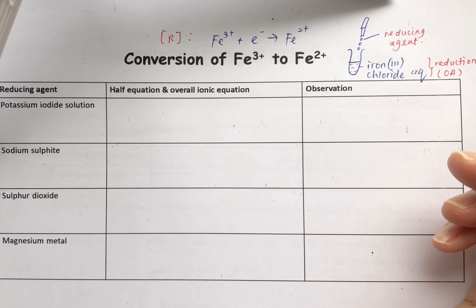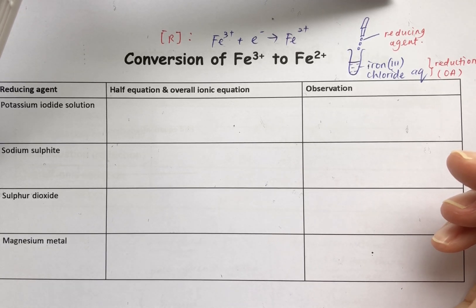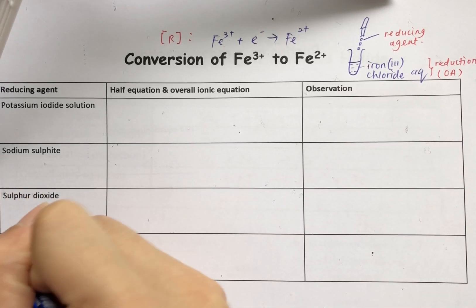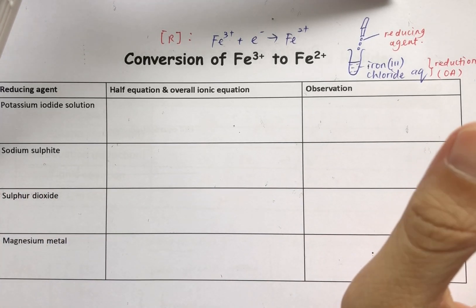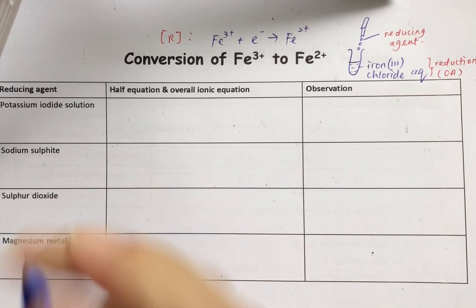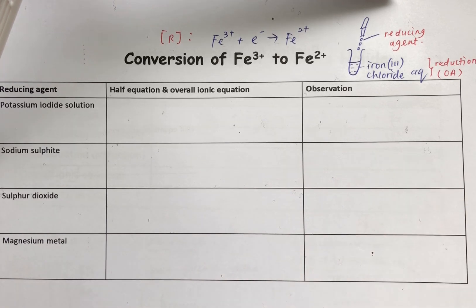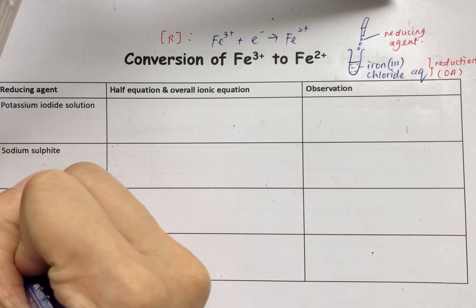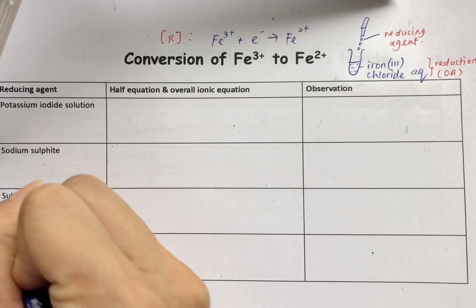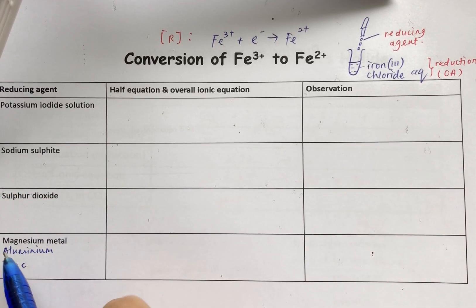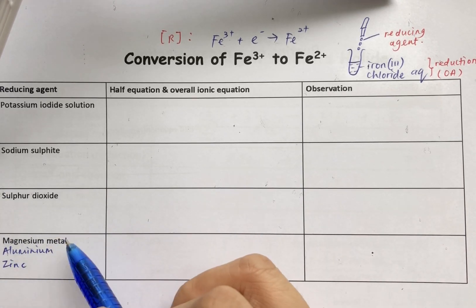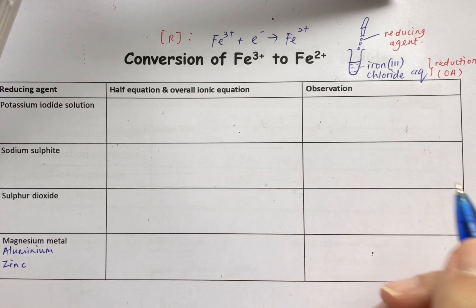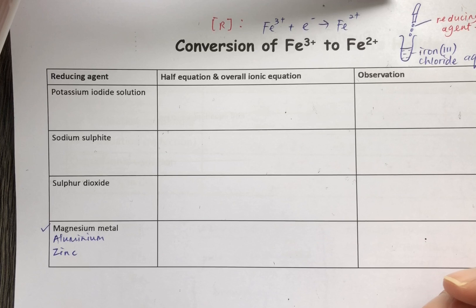There are a lot of reducing agents, but the most important ones fall into two groups. The first category is reactive metals — magnesium, aluminium, and zinc. You can memorize these as MAZ. These three are examples of very good reducing agents. Another very important reducing agent is the halide — halogen in the form of a compound. For example, potassium iodide (KI) or potassium bromide (KBr). These two are very good reducing agents.